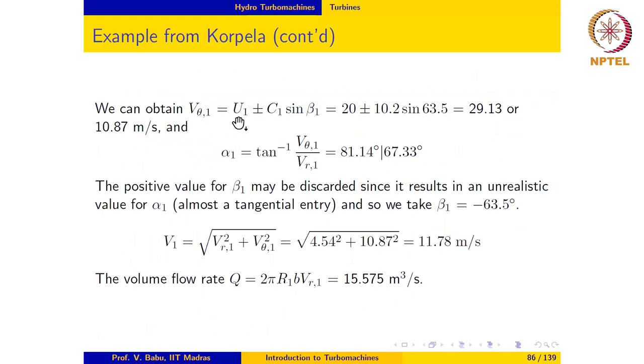Vθ1 as U1 plus or minus C1 sine β1, which after substituting the known values gives 29.13 m per second or 10.87 m per second for Vθ1. Consequently, if we evaluate α1 as arc tangent of Vθ1 over Vr1, we get α1 to be 81.14 degrees or 67.33 degrees.